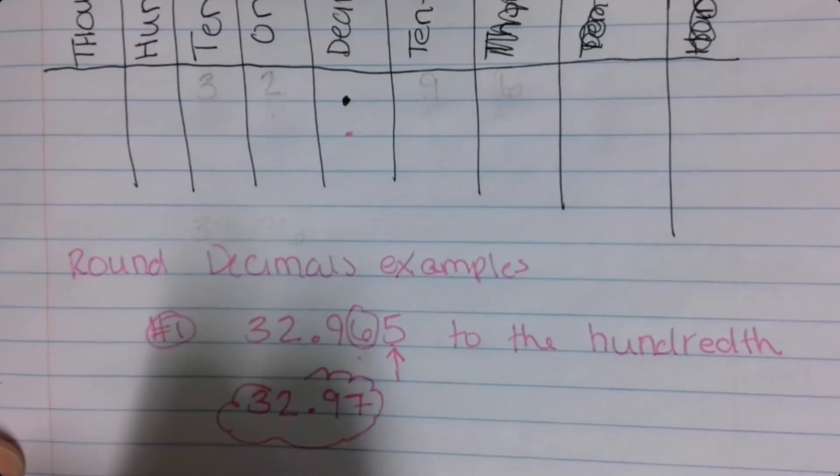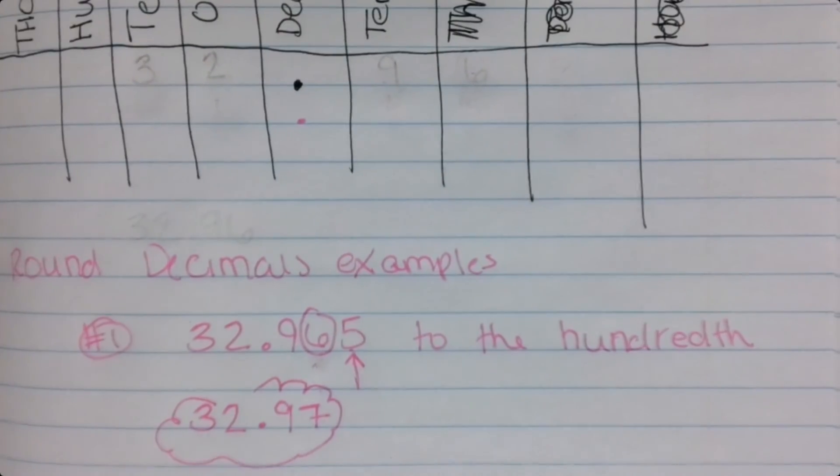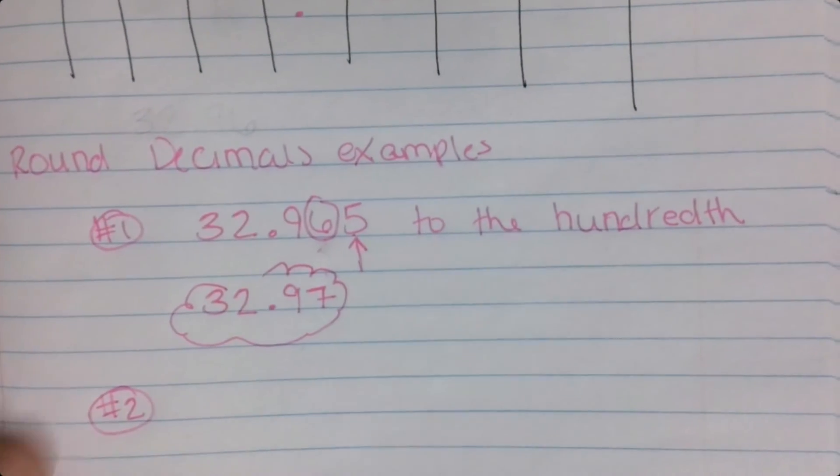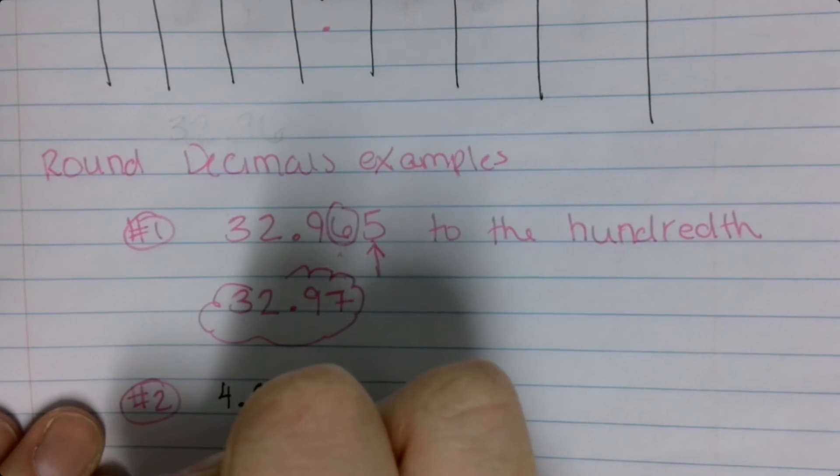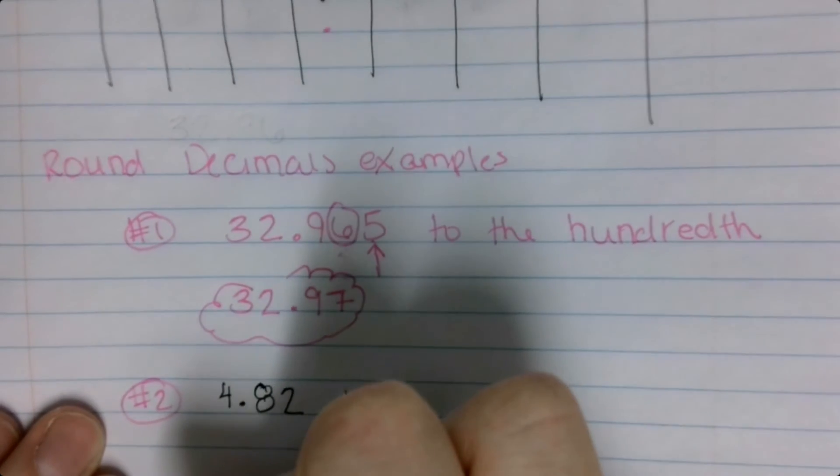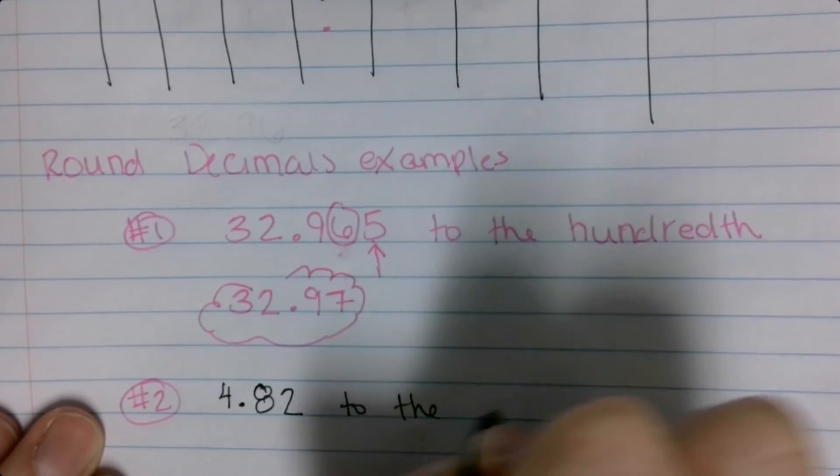Number two. Probably should write in a different color so you can actually see down here. Number two, we'll go with 4.82 to the tenth.